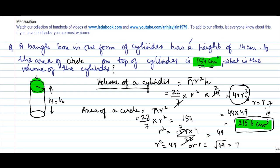You must be wondering where the cube is coming from. Suppose r is 7 centimeters, so 7 cm × 7 cm × 14 cm gives us cubic centimeters.